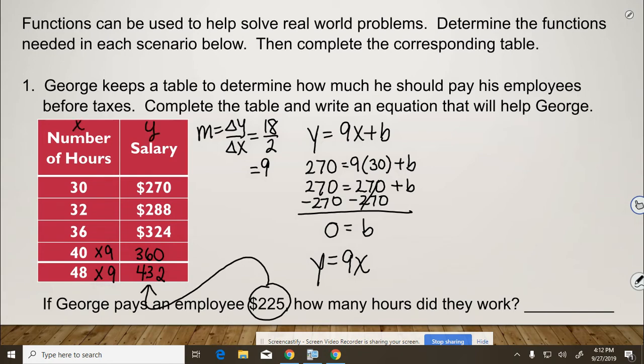So we're going to do 225 equals 9x, divide by 9, and x equals, 9 goes into 22 twice, which is 18, and I've got 4 left over, and 9 goes into 45 five times. So the answer is 25 hours.